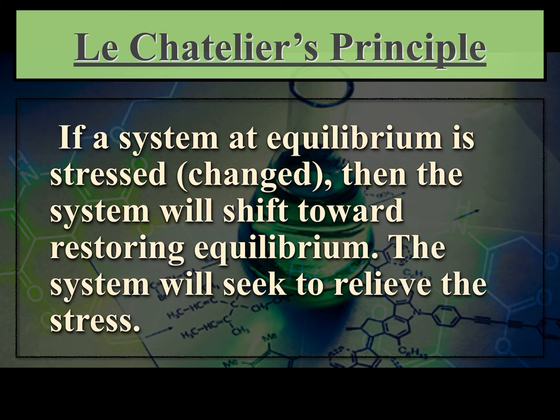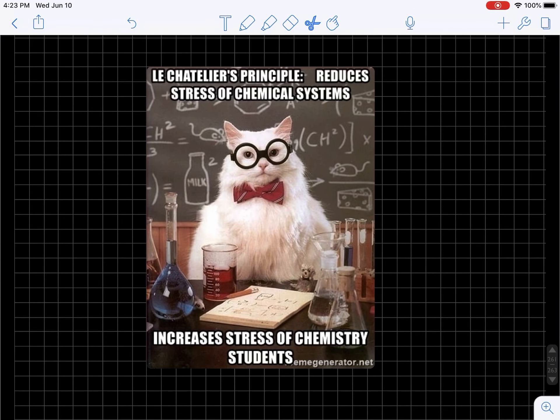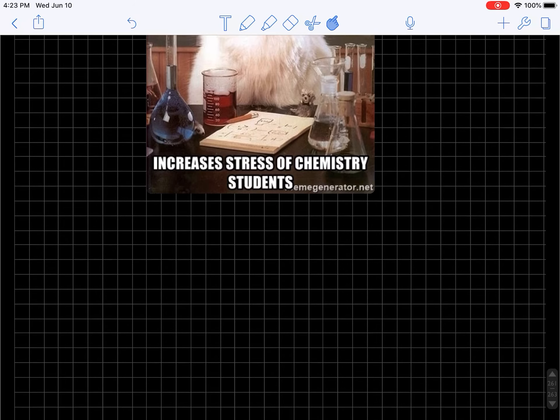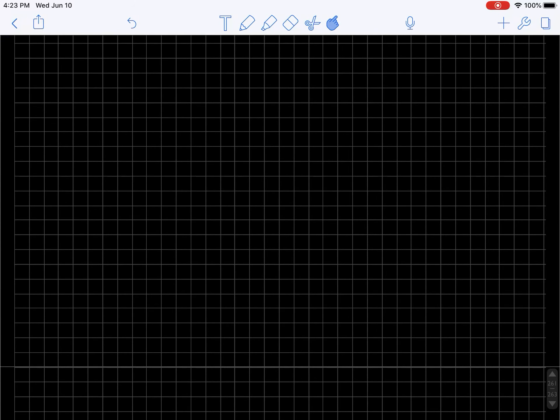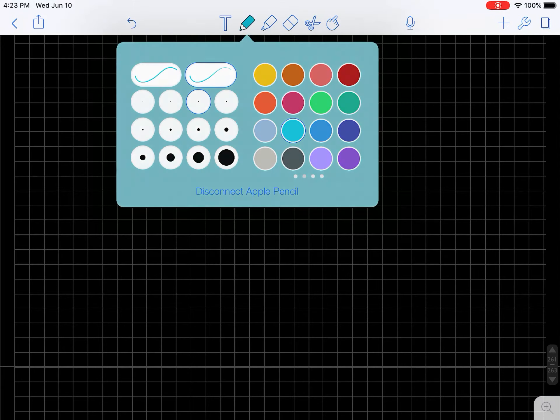So you can change the position of the equilibria, but only a temperature change will actually change the value of the equilibria constant. What that means is we can change the environment and we can kind of trick the system into giving us a better yield.